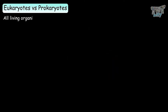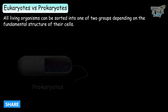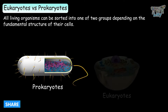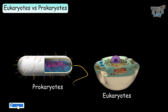All living organisms can be sorted into one of two groups, depending on the fundamental structure of their cells. These two groups are the prokaryotes and the eukaryotes.